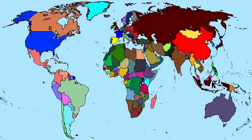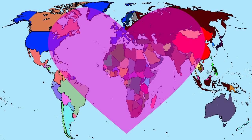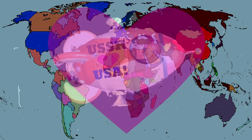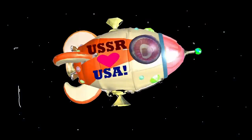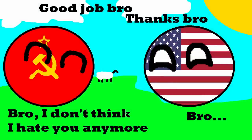In this alternate history scenario, the USSR never collapses and the Cold War continues into the 21st century. The Iron Curtain remains in place and the two superpowers remain locked in a state of political and military tension. However, as the world moves towards greater globalization, the leaders of the USSR and the United States begin to see the benefits of increased cooperation and open borders. In the early 2020s, a joint space mission to Mars is proposed as a symbol of unity and a step towards a more peaceful future. The mission is a massive success and the two countries' relationship continues to thaw.